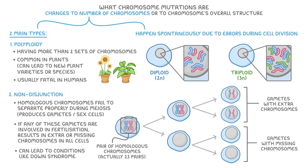This can lead to conditions like Down syndrome, where there's an extra chromosome 21.